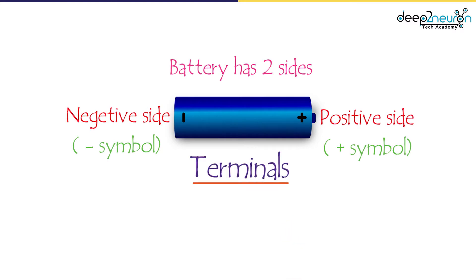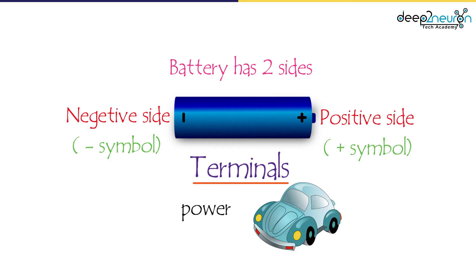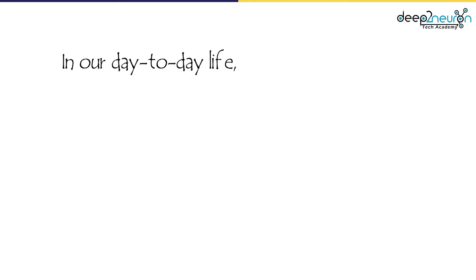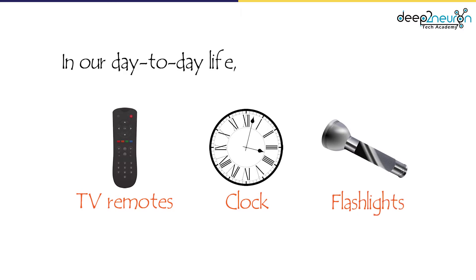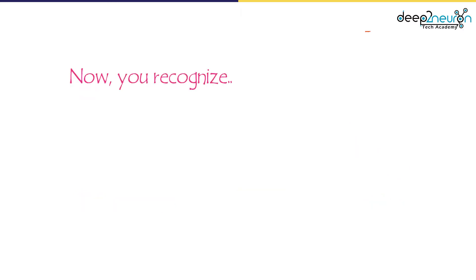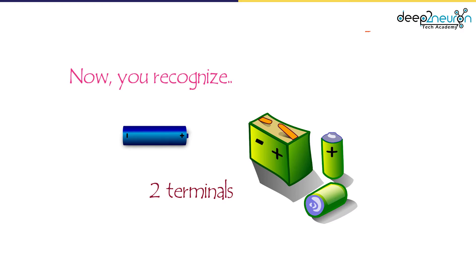The terminals provide the power to run the car — and not only cars, but also things we use in our day-to-day life, for example TV remotes, clocks, flashlights, etc. Now you may recognize that all those batteries have two terminals. But see this picture.